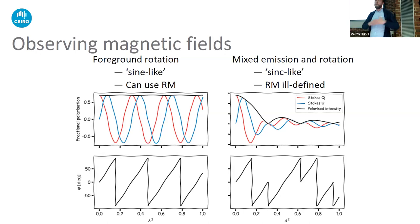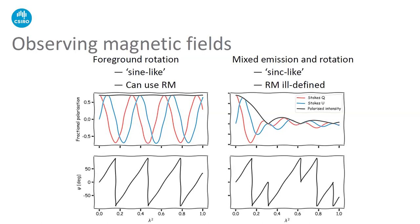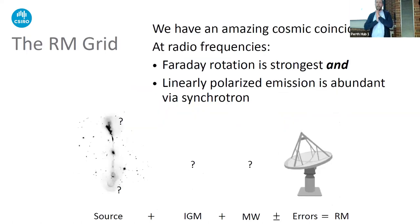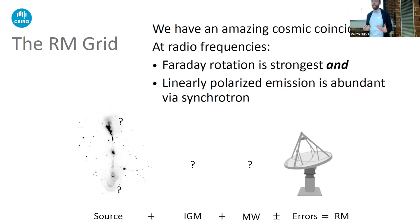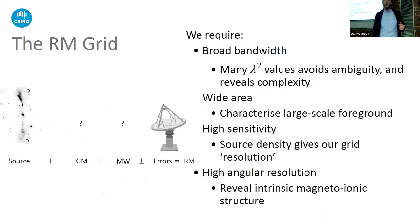Low radio frequencies give the most wavelength-squared coverage, but conversely tend to be more depolarized. We're just greedy for observations of wavelengths — we want as many as we possibly can. The rotation measure grid experiment uses our background synchrotron-emitting sources, like the radio galaxy shown here, to probe the foreground material. We also study the individual sources themselves, exploiting the cosmic coincidence of strong Faraday rotation at radio frequencies and an abundance of linearly polarized synchrotron emission.